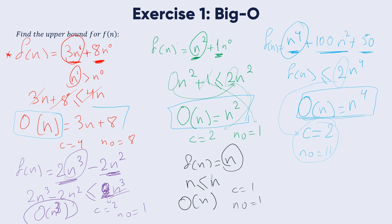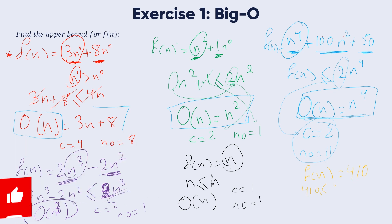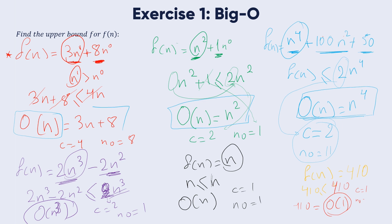Another example: f of n equal to 410. Since 410 is a constant, 410 is less than or equal to 410 for all n greater than 1. This means f of n equal to 410 is O(1), with c equal to 1 and n₀ equal to 1.